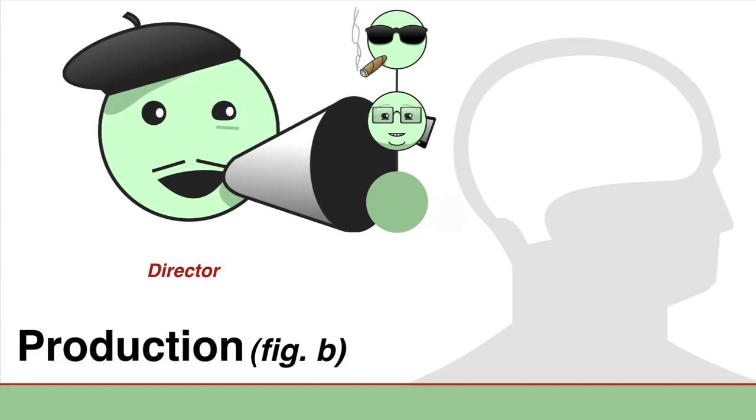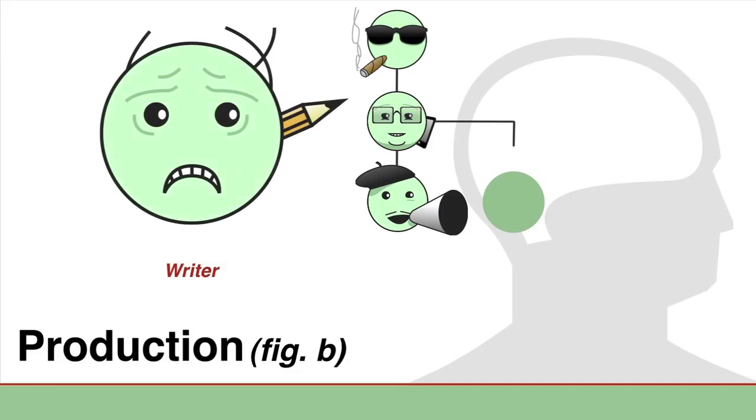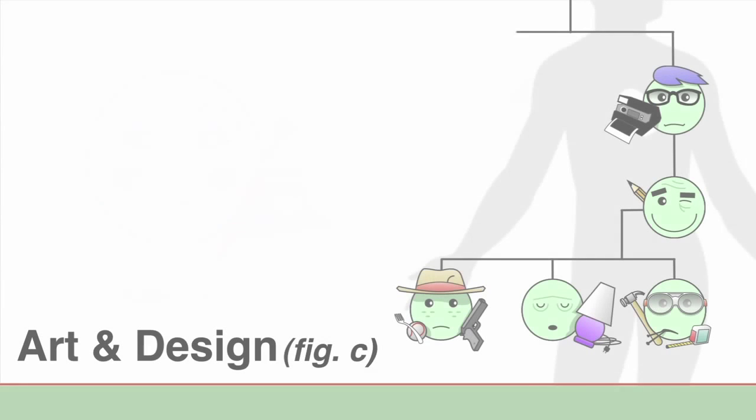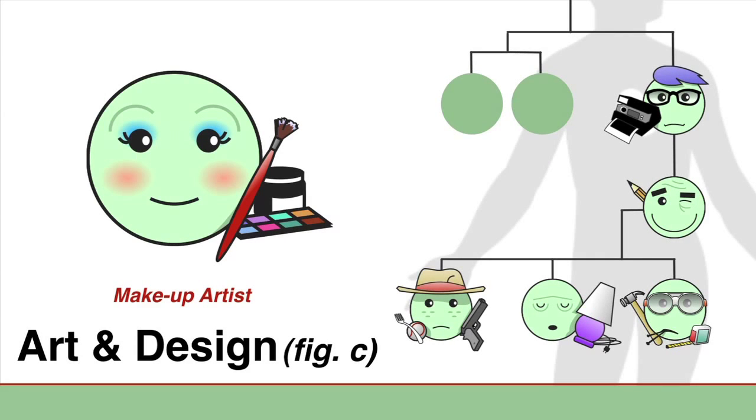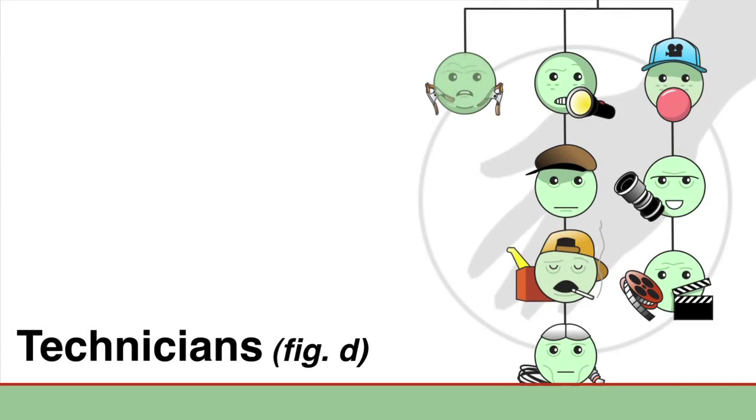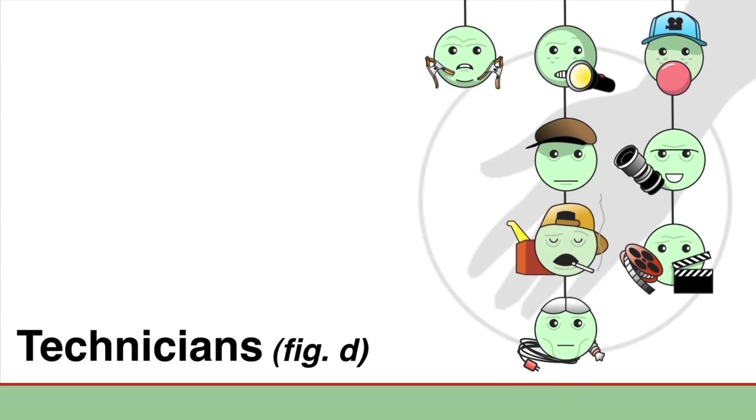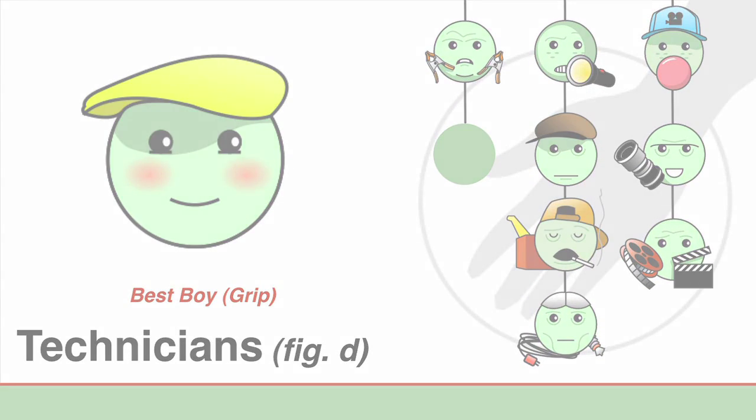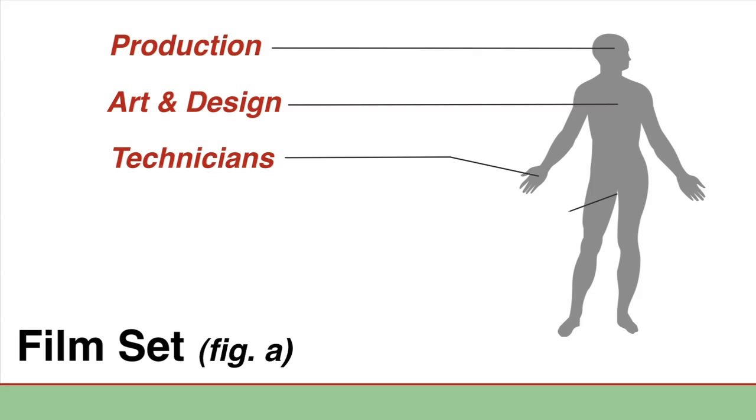We've learned how the production department launches the project and keeps the film shoot running. We've looked at the various talented artists and designers that bring the world of the film to life. And we've seen how the technical personnel actually craft the final film seen by audiences. But even still, there are other key members of a film crew that cannot be classified so easily.